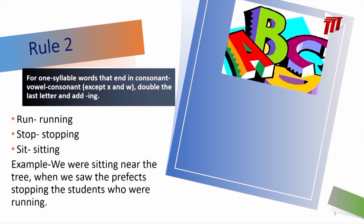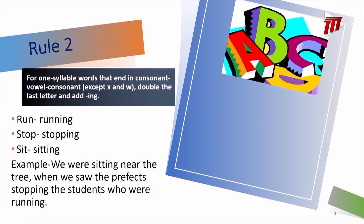The same happens for the word 'stop' — S-T-O-P. T is a consonant, O is a vowel, and P is a consonant. So we double the end consonant P and then add ING to produce 'stopping': S-T-O-P-P-I-N-G. I'm sure that all of you would be able to guess the correct spelling for the word 'sit' by now. Because we have the same pattern — consonant-vowel-consonant — we double the T and then add ING to give us 'sitting': S-I-T-T-I-N-G.